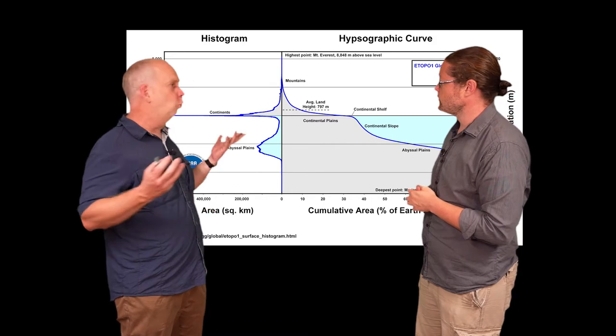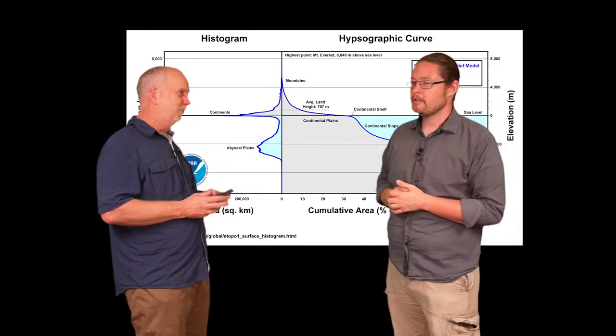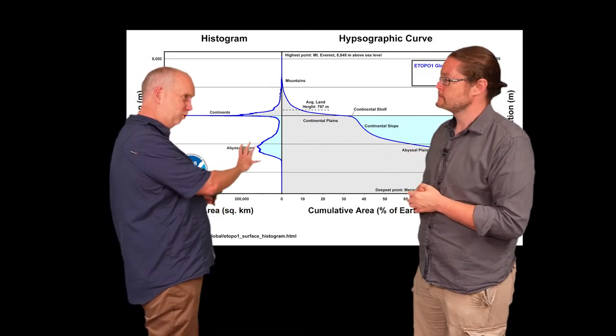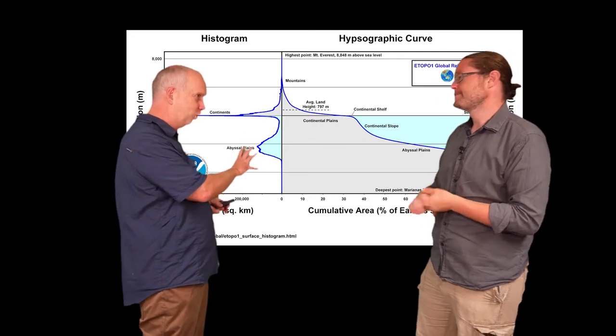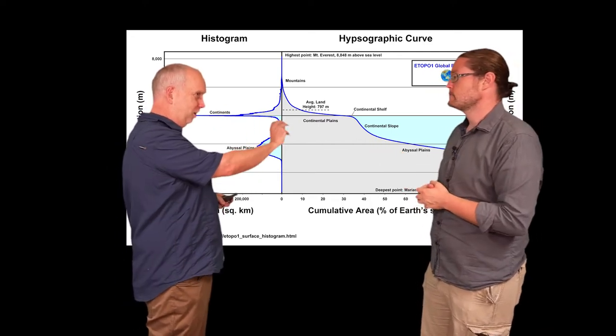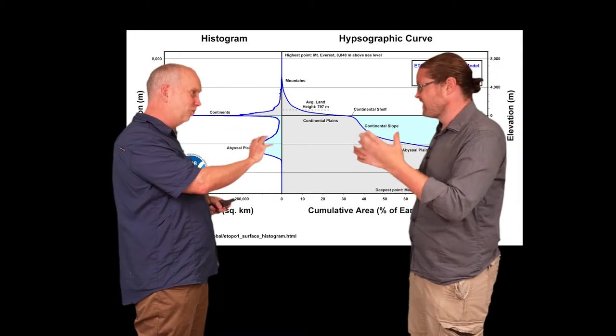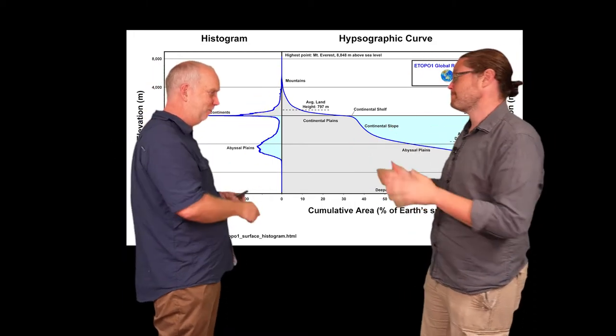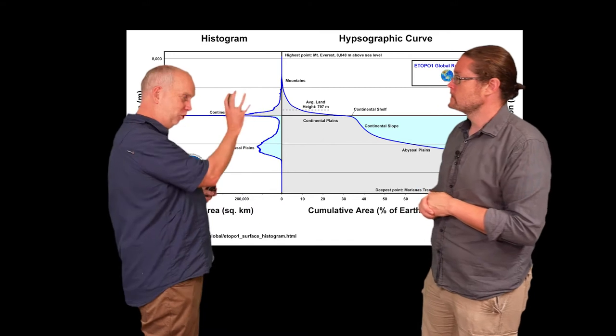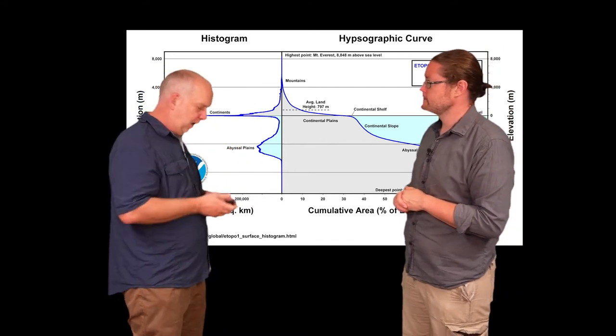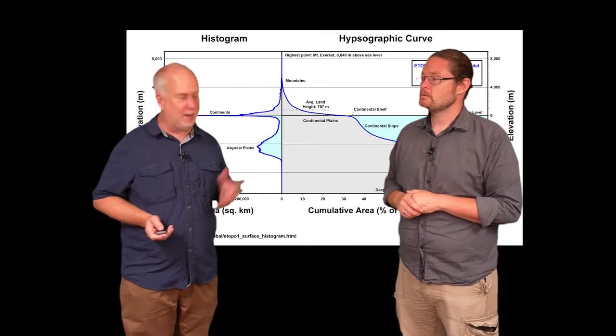You can actually do a histogram—take every point on Earth and measure its altitude. What you see is there's an awful lot of the Earth that's very close to sea level, and there's an awful lot at the bottom of the deep plains, and there's a gap in the middle. So the Earth is what we call bimodal statistically.